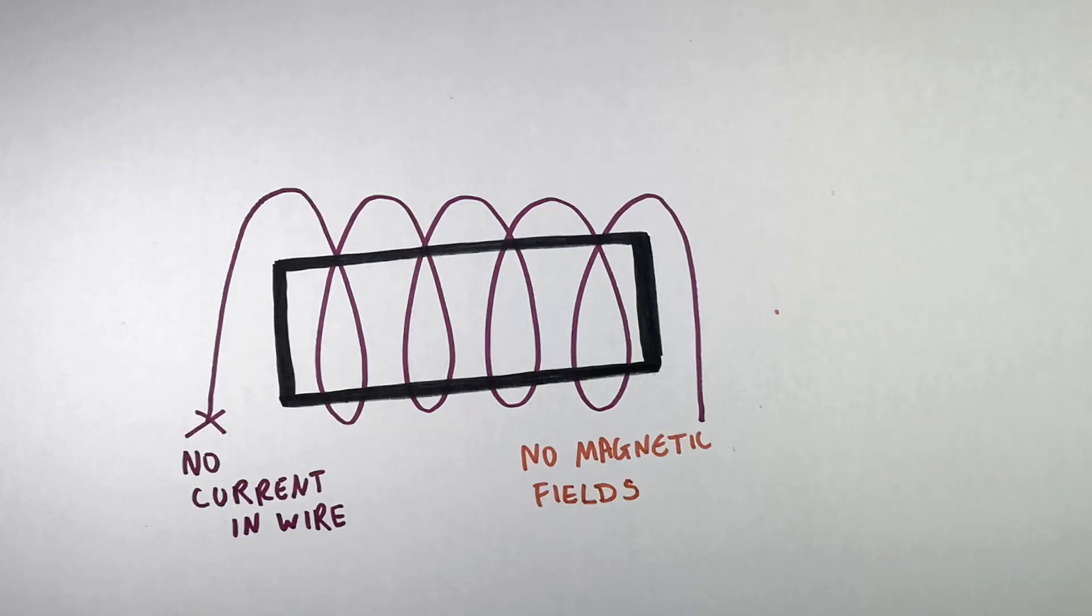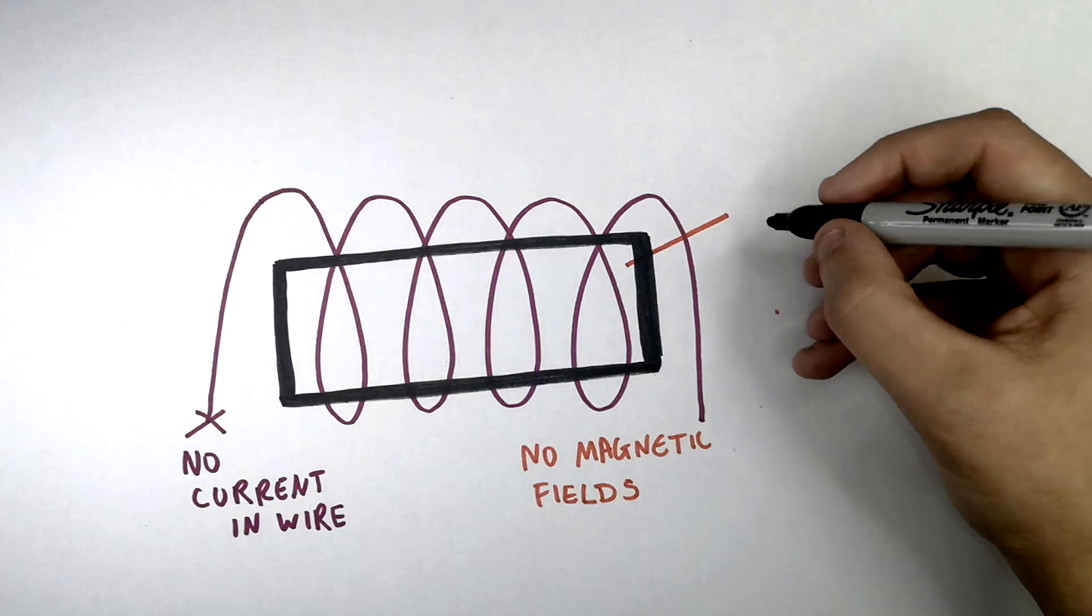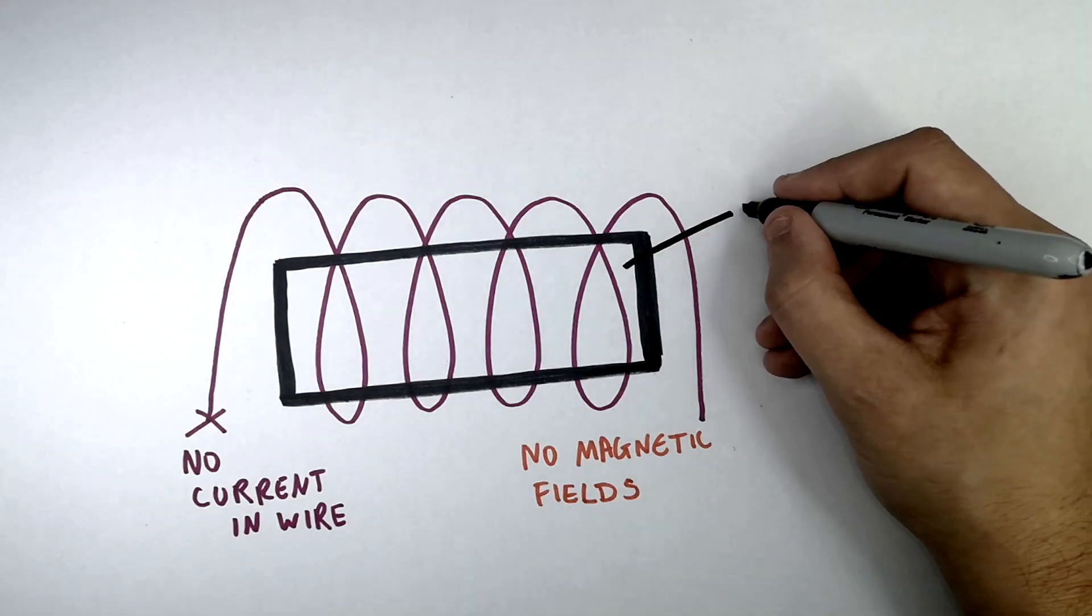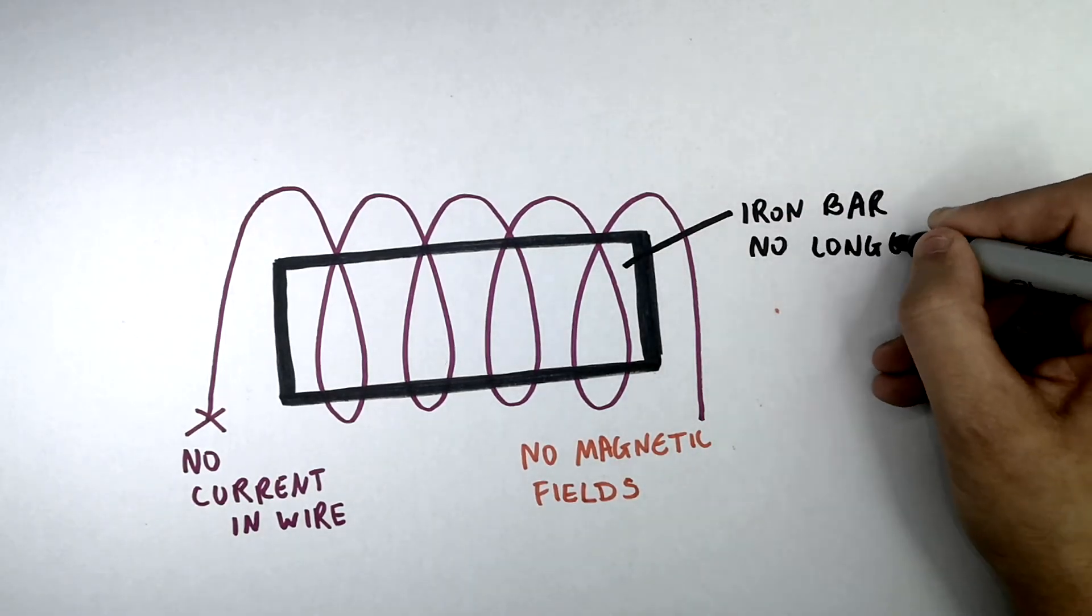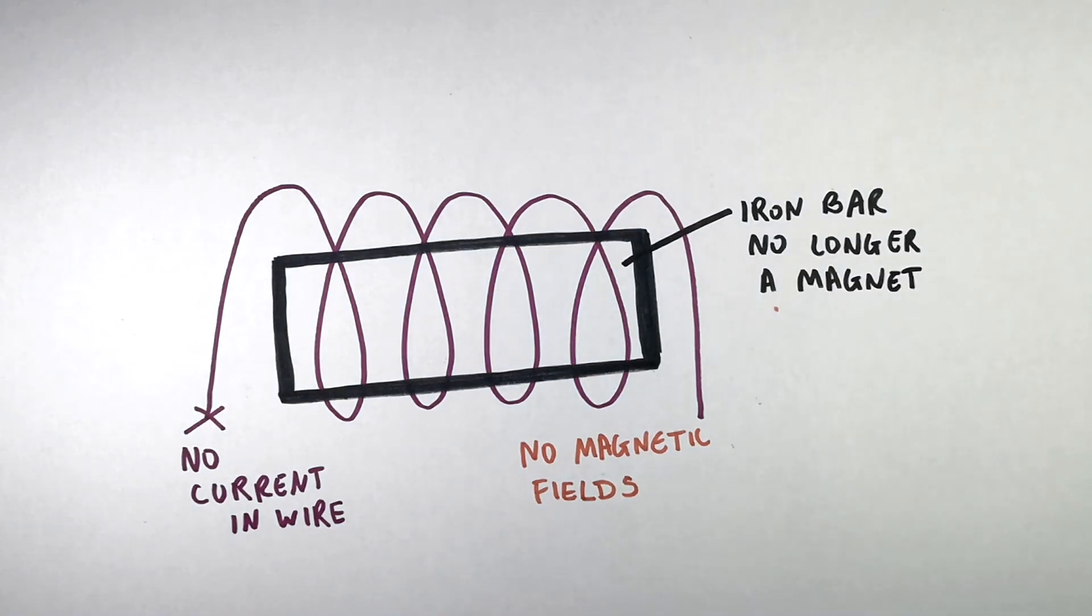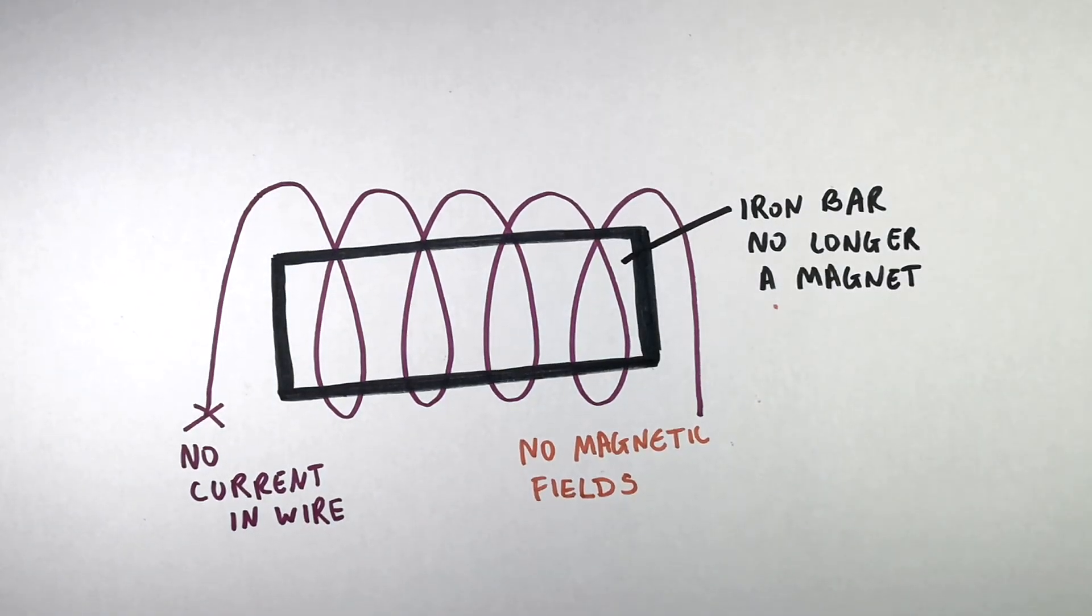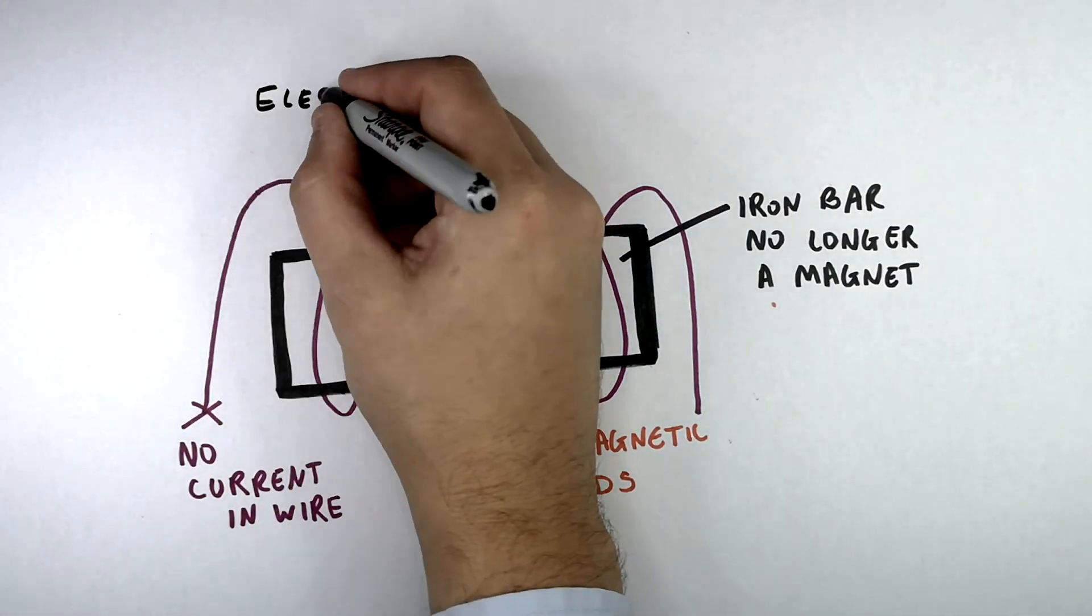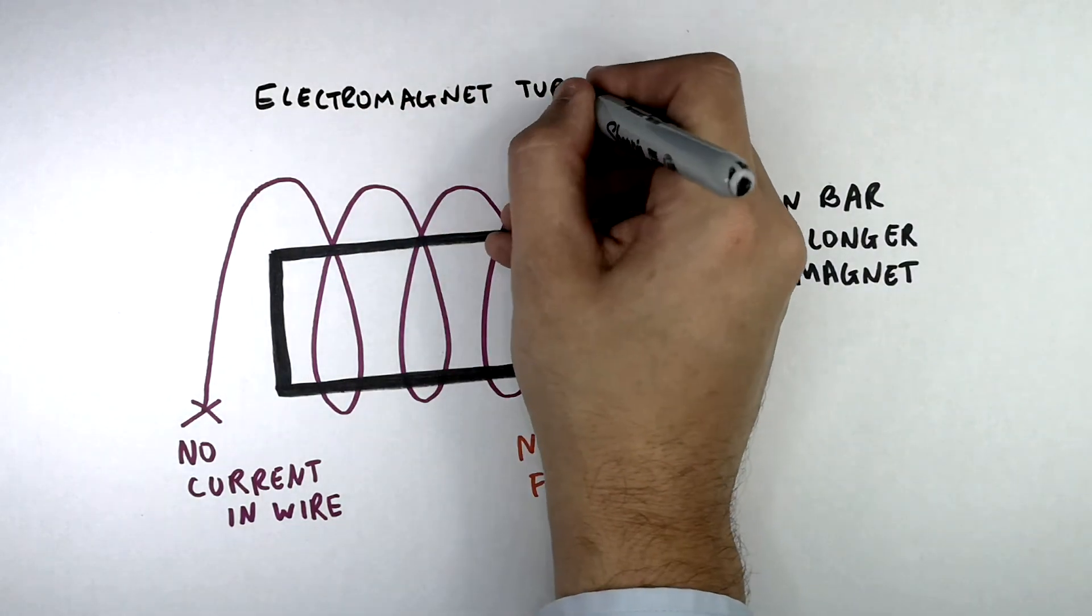Well, now you've got no current in the wire, which means you've got no magnetic fields. So now the iron bar which was an induced magnet is no longer a magnet. So the iron bar is no longer a magnet, which means that the electromagnet is no longer a magnet. So it no longer has the properties of magnetism.